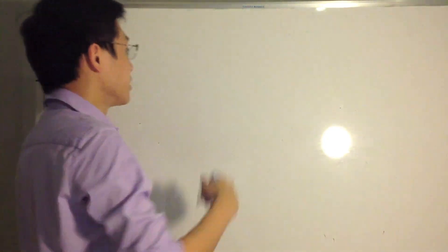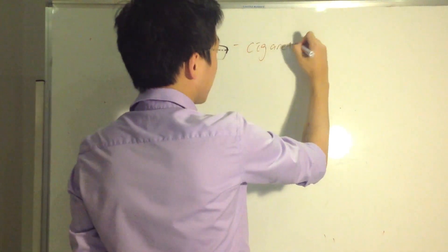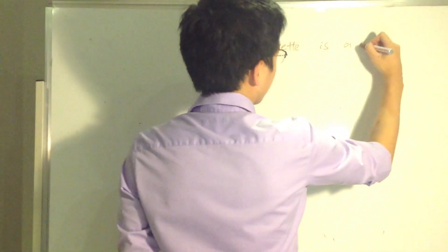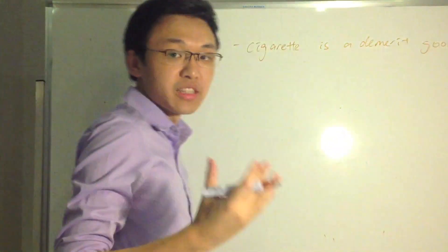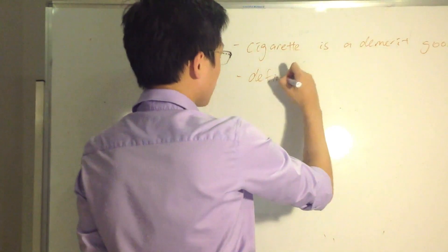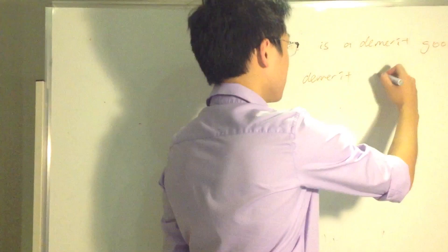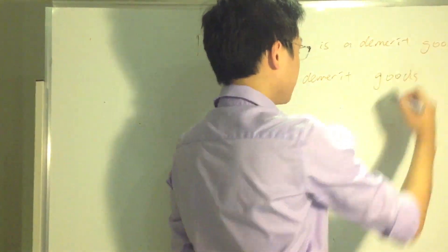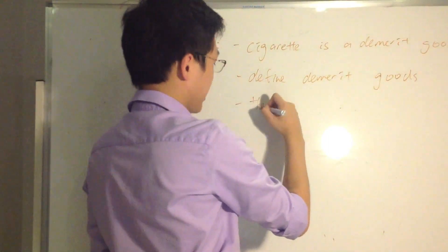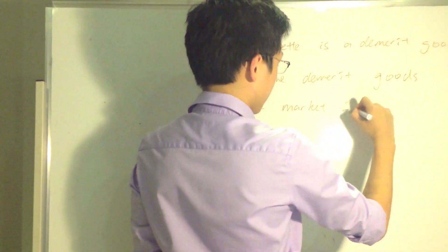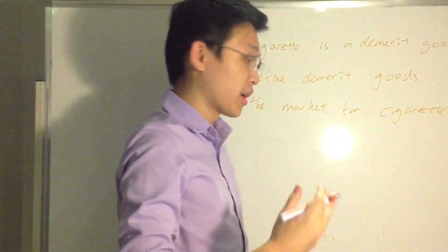So for paragraph one, I would recommend you state that cigarette is a demerit good. Start off by saying that, and then define demerit good. So what is a demerit good? A demerit good is any goods with negative externalities of consumption. Let's define that. Say that the market for cigarettes is an example of market failure.